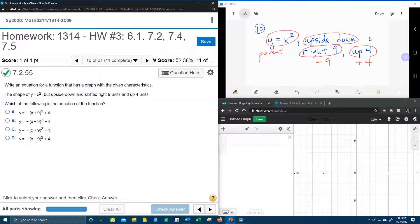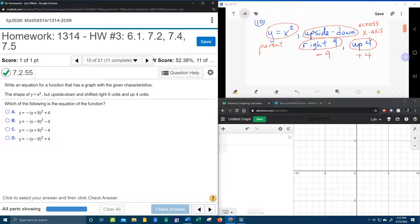And so what upside down really means is that it wants to reflect it across the x-axis. That's the main thing. Upside down means we're going to reflect it across the x-axis. So here we have three transformations.